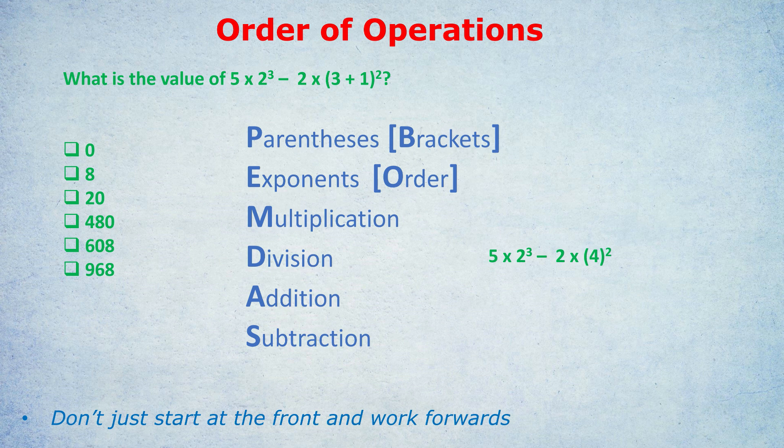2 cubed doesn't mean 2 times 3 — it means 2 times itself three times: 2×2×2 = 8. 4 squared means 4 times itself twice: 4×4 = 16. Now, should we do the subtraction next, like 8 minus 2? No — multiplication comes before subtraction. So: 5×8 = 40 and 2×16 = 32. Finally, the subtraction: 40 minus 32 = 8. The answer is B.